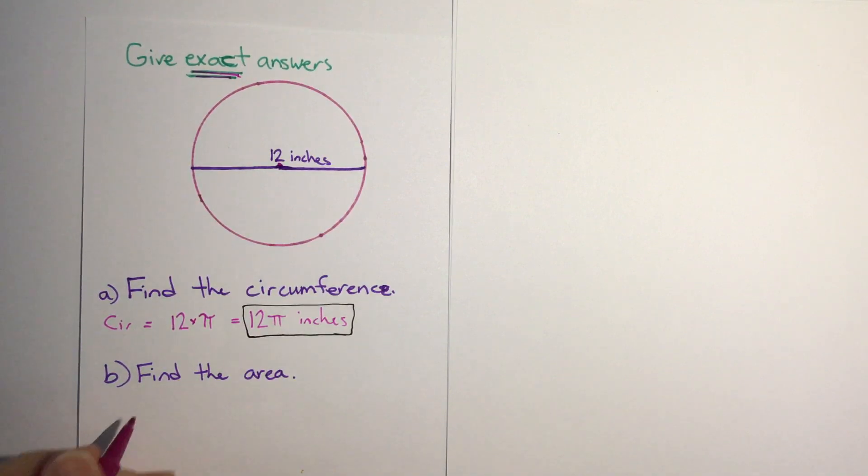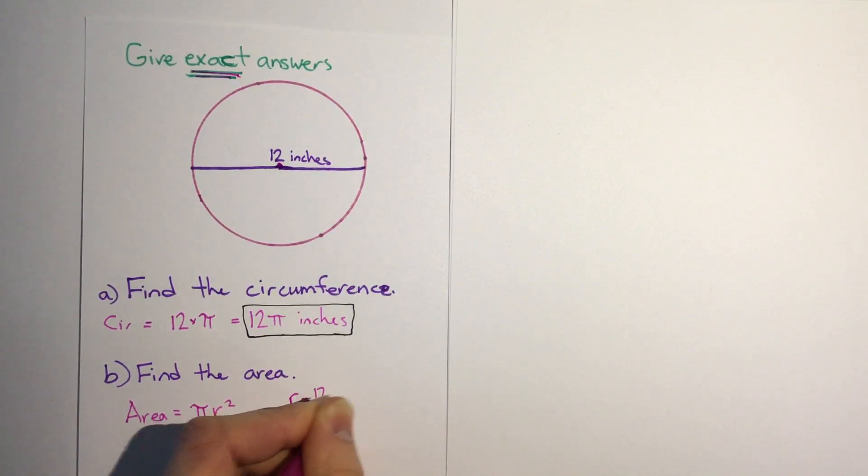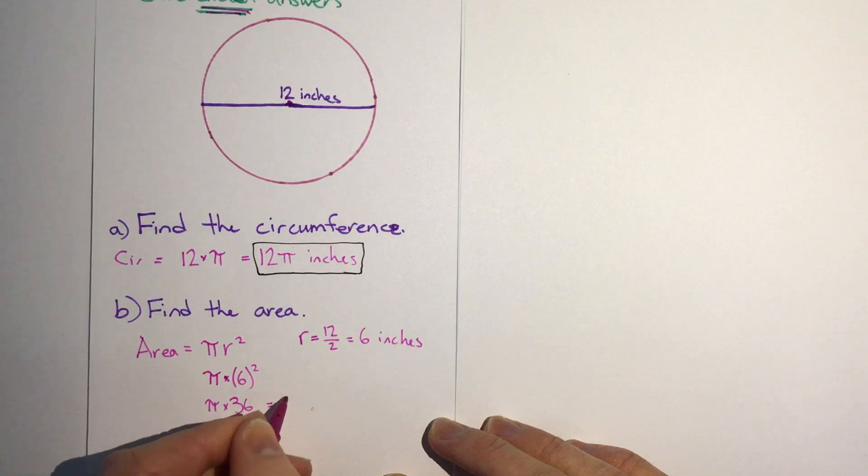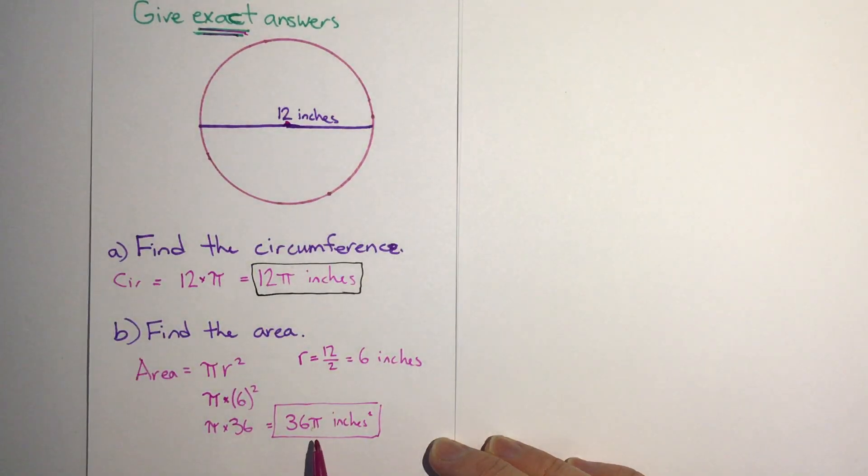For area, remember that we have our formula πr². Here we've been given the diameter, but we need the radius. Remember radius is half of the diameter, so radius would be 12 divided by 2, or 6 inches. So if we look at that, that means here we have π times 6², and 6² or 6 times 6 is 36. So π times 36, or we can write that as 36π inches squared. And again that's our final answer - since it says exact answer we won't put that in the calculator, but we'll leave it like that.